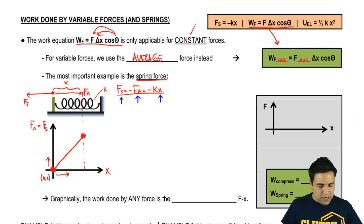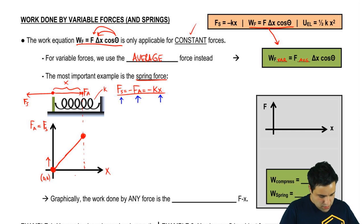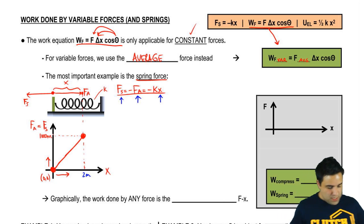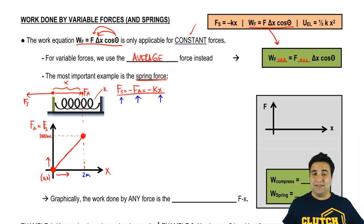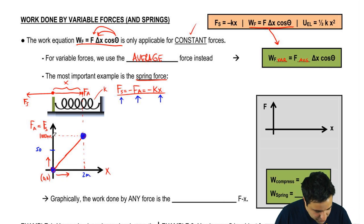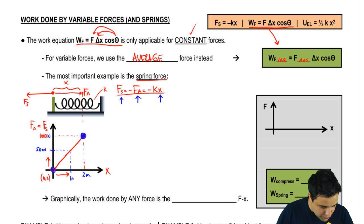If the deformation is zero, I'm not pushing at all, so we have (0, 0). As x grows, the force grows linearly. Let's say the maximum deformation is two meters, requiring a force of 1000 newtons. So the average between zero and 1000 newtons is 500 newtons, which corresponds to a compression of one meter — half the maximum force gives half the maximum compression.